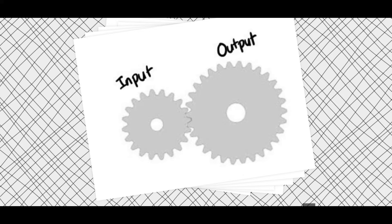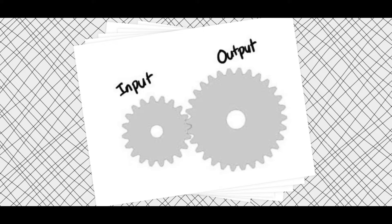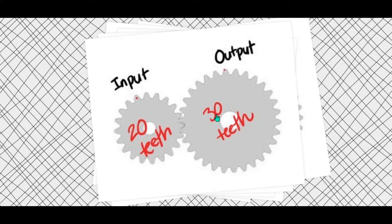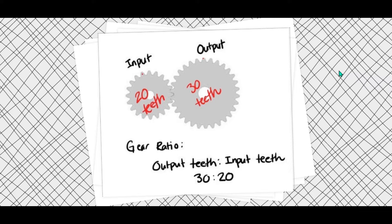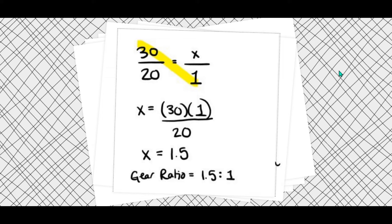Here we have two gears. The one on the left is the input gear and the one on the right is the output gear. To find the gear ratio, we count the teeth. The input gear has 20 teeth and the output gear has 30 teeth. Gear ratio is output to input, so the gear ratio is 30 to 20.